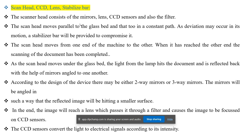The scan head consists of mirrors, lens, CCD sensors, and a filter. The scan head moves parallel to the glass bed in a constant path. Since deviation may occur in its motion, a stabilizer bar is provided to compensate. The scan head moves from one end of the machine to the other; when it reaches the other end, the scanning of the document is complete.